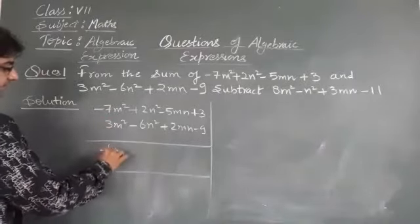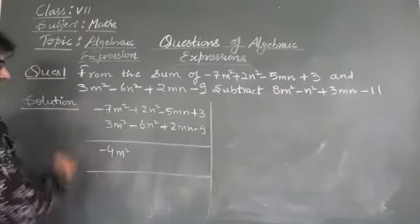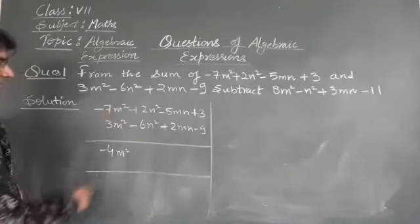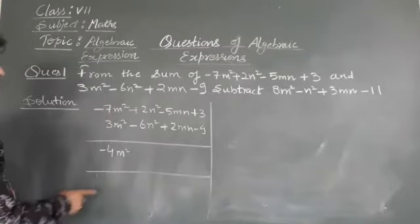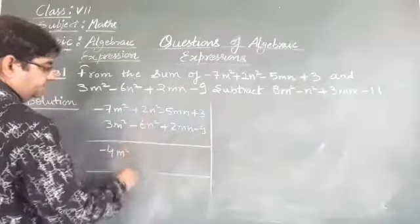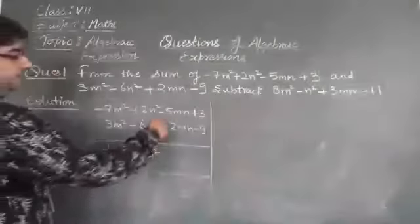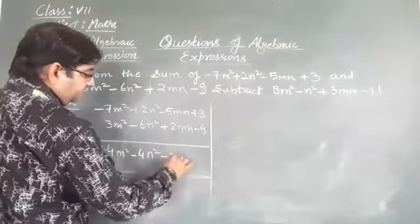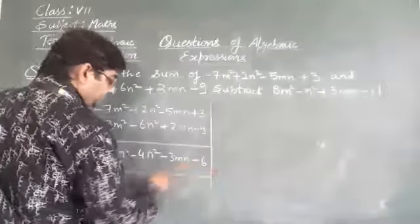We will get minus 4n square because on adding we get minus 4n square. Here is a minus 7n plus 3, we will add the terms, but here is a minus sign, so the answer will be minus 4n square. 2n square minus 6n square, we will get minus 4n square. Minus 5mn plus 2mn gives minus 3mn. Plus 3 minus 9, we get minus 6.